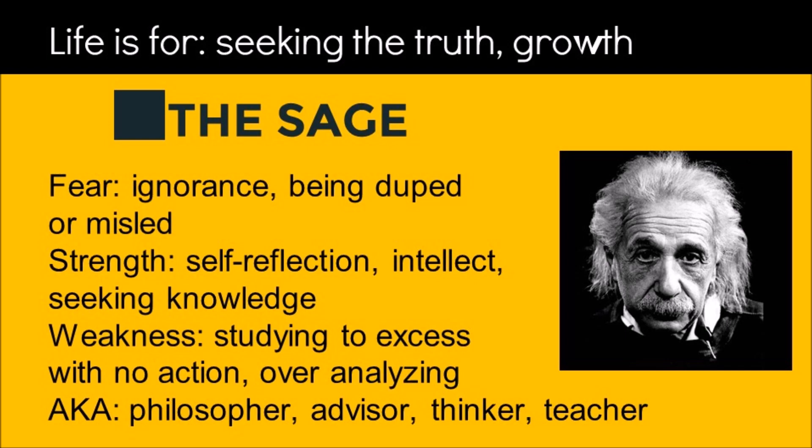The next archetype is the sage. To the sage, life is for seeking truth and for growth. They fear ignorance, being duped, or being misled. The sage's strengths are self-reflection, intellect, and seeking knowledge. Their weaknesses are studying to excess with no action, or over-analyzing. The sage can also be known as the philosopher, the advisor, the thinker, or the teacher.